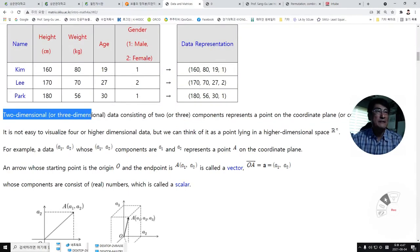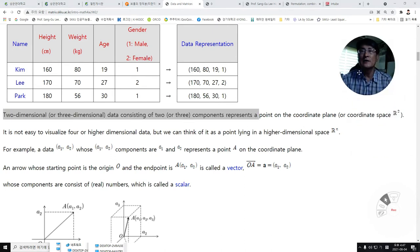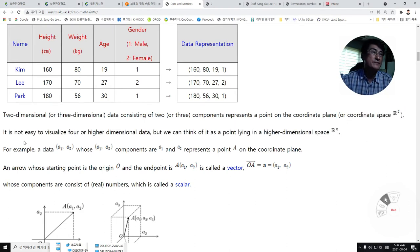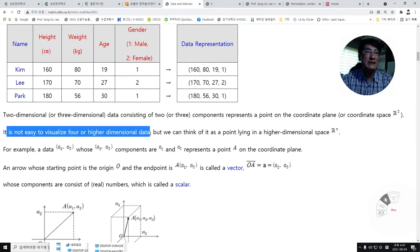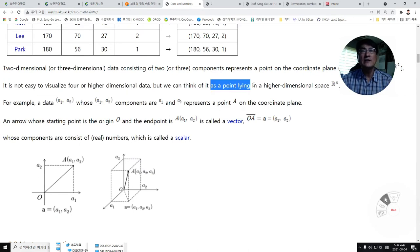Two-dimensional or three-dimensional data consisting of two or three components represents a point on the coordinate plane or coordinate space R2 or R3. It is not easy to visualize higher dimensional data, but we can think of it as a point lying in a higher dimensional space Rn.